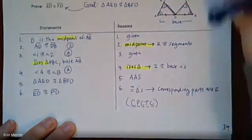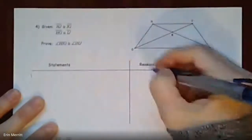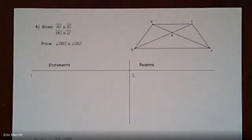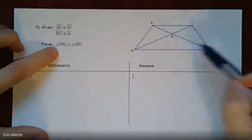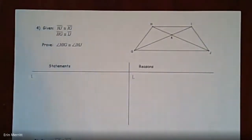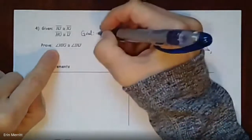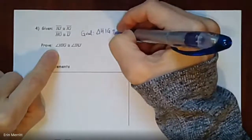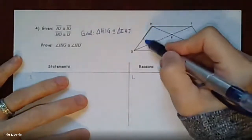Let's do one more example — number four. We have HJ congruent to IG, and HG congruent to IJ, and we want to prove that angle HIG is congruent to angle IHJ. A helpful hint: when you're asked to prove a pair of angles congruent, change the angle symbol to a triangle symbol and make that your goal — triangle HIG needs to be congruent to triangle IHJ. Let's outline those triangles in the diagram.